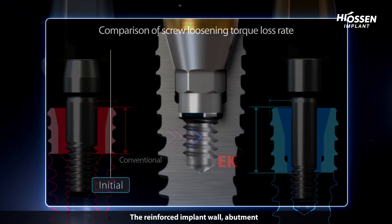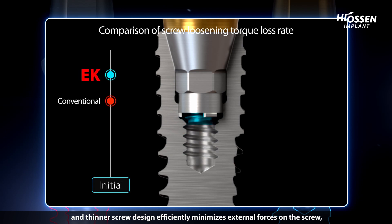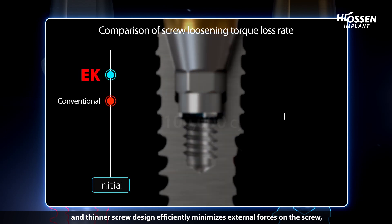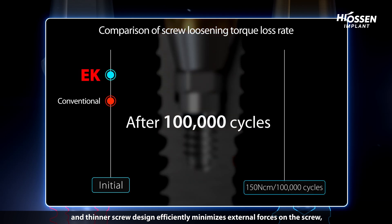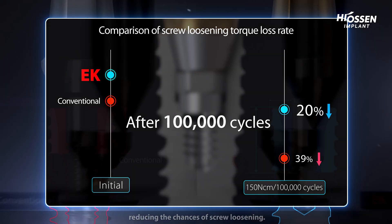The reinforced implant wall, abutment, and thinner screw design efficiently minimizes external forces on the screw, reducing the chances of screw loosening.